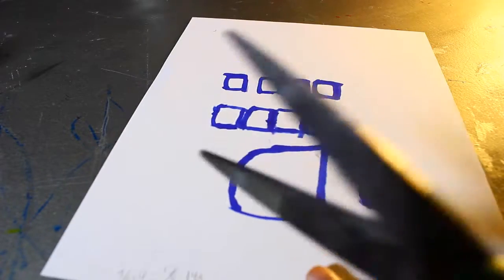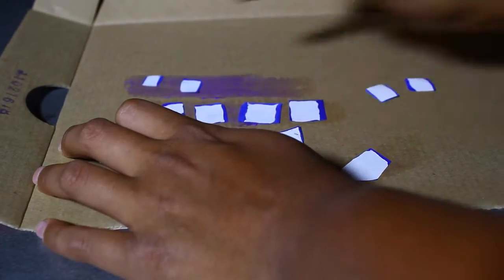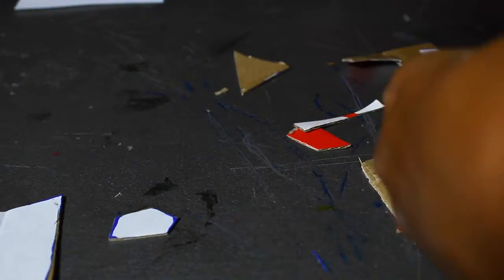Now you want to get your template in the link below and cut it out. Now you want to get your glue stick out and glue the pieces to the cardboard. Now that you have the template glued onto your cardboard, you want to cut it out.